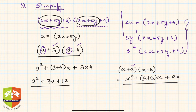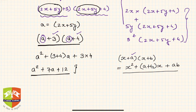While solving, it's good practice to keep in mind the kind of expressions you are getting, because in later chapters you will be given such expressions and asked to factorize them. So keep these things in mind — what expressions you get by multiplying two factors, so that factorization becomes easier. Now we know what a is, so let us substitute: (2x+5y)² + 7(2x+5y) + 12.